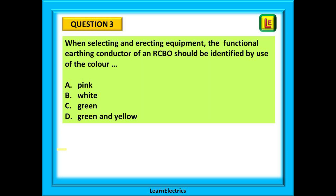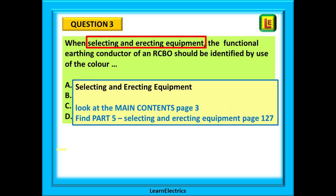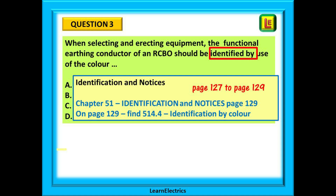On to question 3. When selecting and erecting equipment, the functional earthing conductor of an RCBO should be identified by use of which colour? Four possible colours are shown. Look for the key words: 'selecting and erecting equipment', 'functional earthing conductor', 'identified by the colour'. Go straight to page 3, the main contents page. Looking down the page we find Part 5, selecting and erecting equipment, which takes us to page 127. Under chapter 51 we find 514, identification and notices, sending us to page 129.